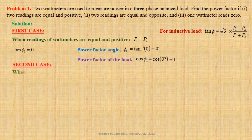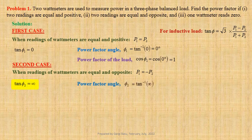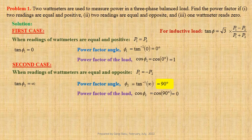Second case: when readings of wattmeters are equal and opposite. Assuming the voltage coil of the second wattmeter is reversed, P1 equals −P2. In this case, tan φ₂ equals infinity. Power factor angle φ₂ equals tan⁻¹(∞), that is 90 degrees. Power factor of the load, cos φ₂ equals cos(90°), that is equal to 0. For purely inductive or purely capacitive load, wattmeter readings are equal and opposite. For purely capacitive load, the voltage coil of the first wattmeter must be reversed, so P2 equals −P1.